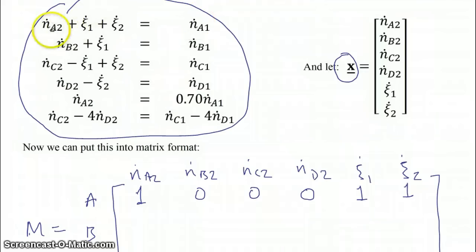For the material balance on B, which is the second equation here, the coefficient for N dot B2 is 1, and for ξ1 is 1, all the rest are 0.